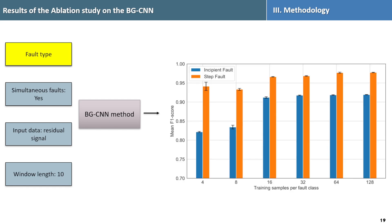Looking at fault types, step fault had higher F1 score while incipient fault were more challenging due to their gradual nature.